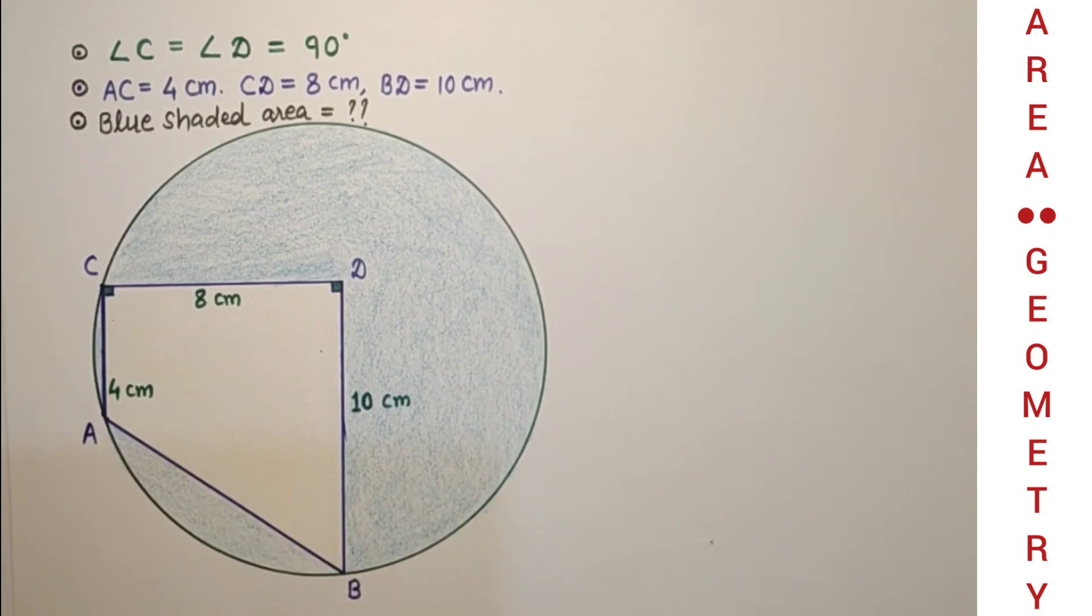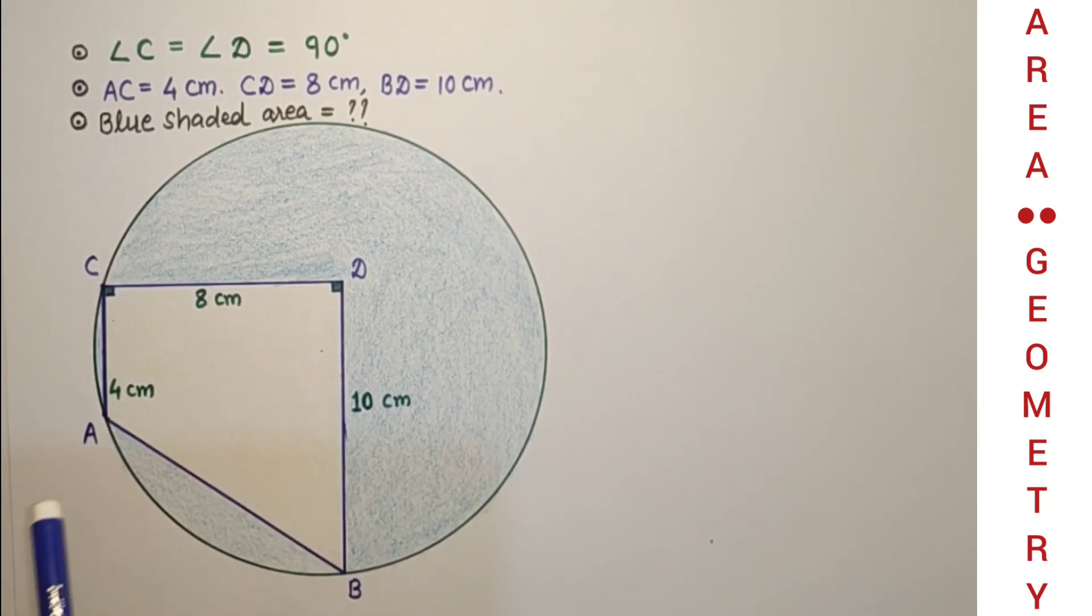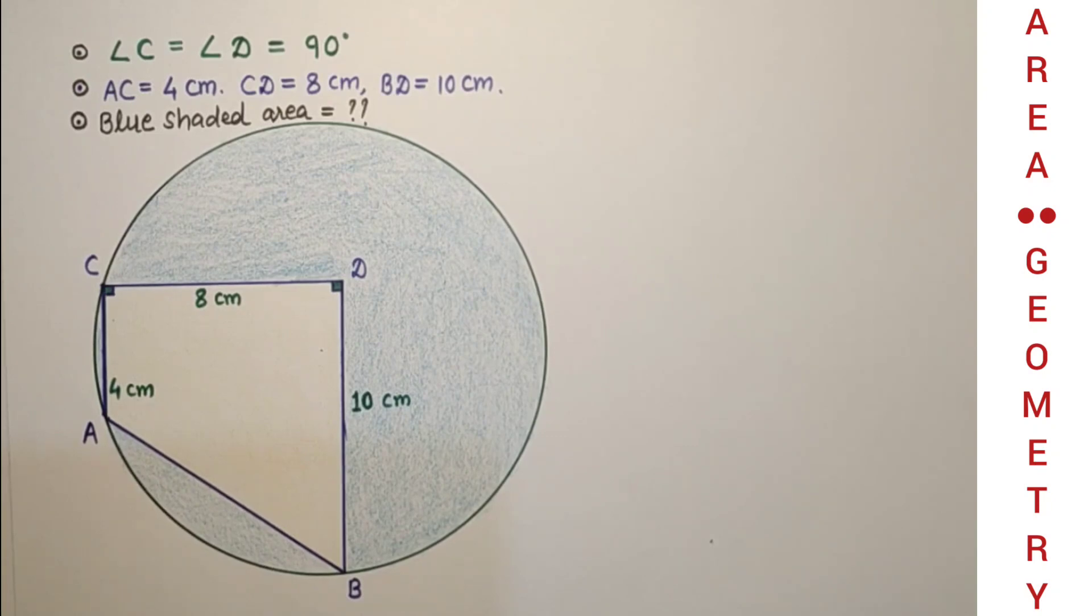We are given a circle. Inside the circle a trapezium ABDC is drawn and side lengths are given here: CD is 8 cm, CA is 4 cm, BD 10 cm, and these two angles are right angles. We have to find the blue shaded area, that means area of the circle minus this area of trapezoid.